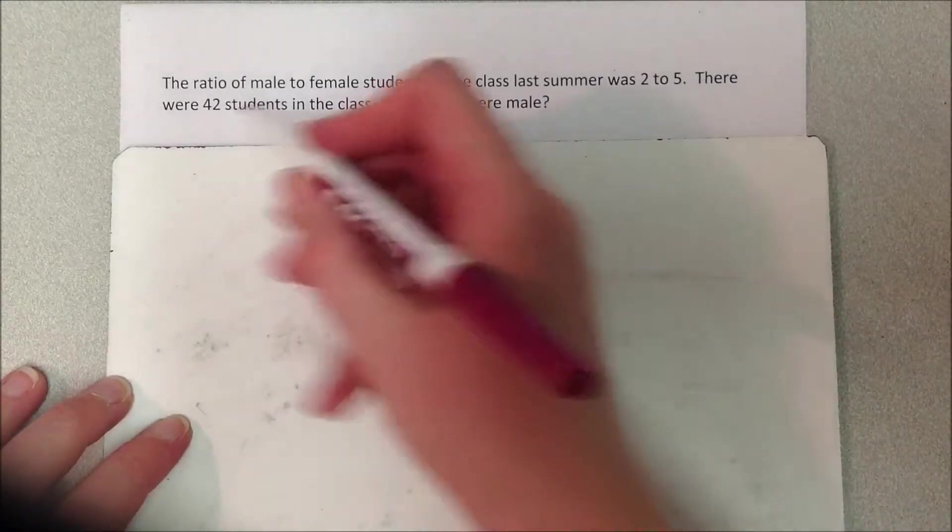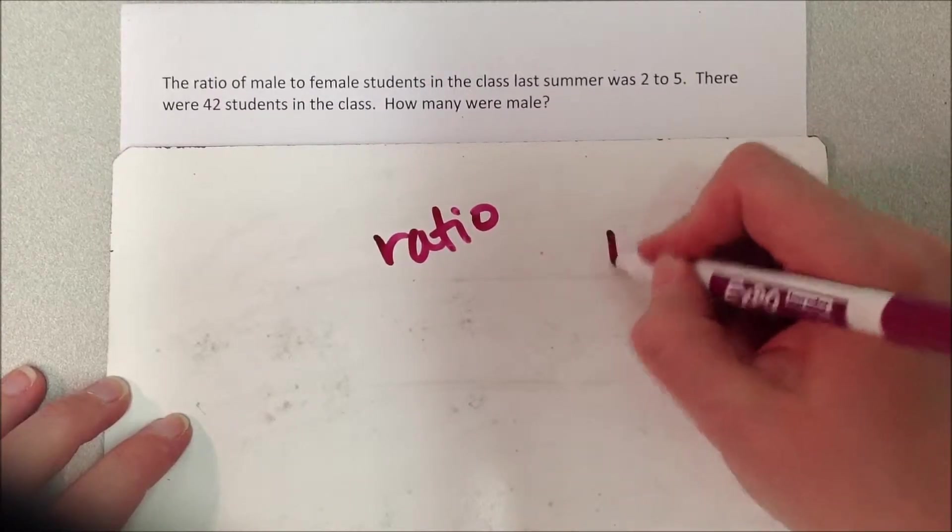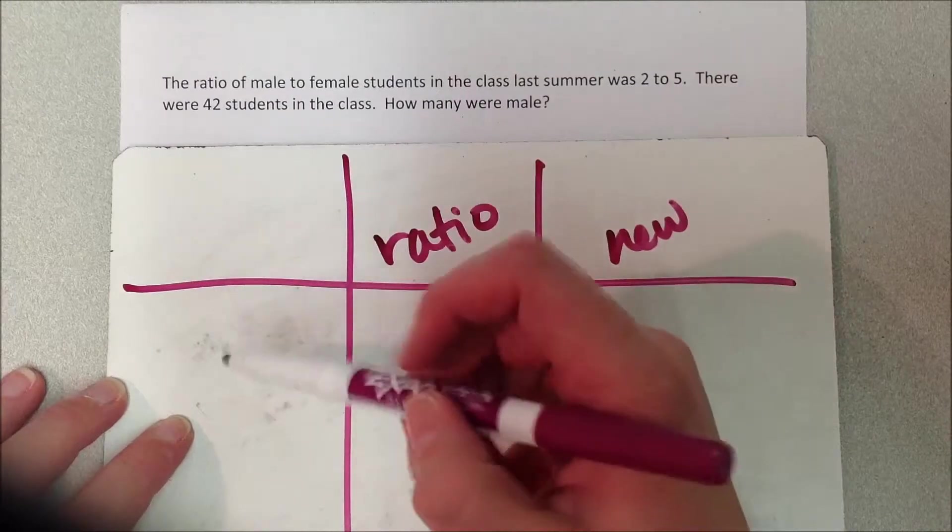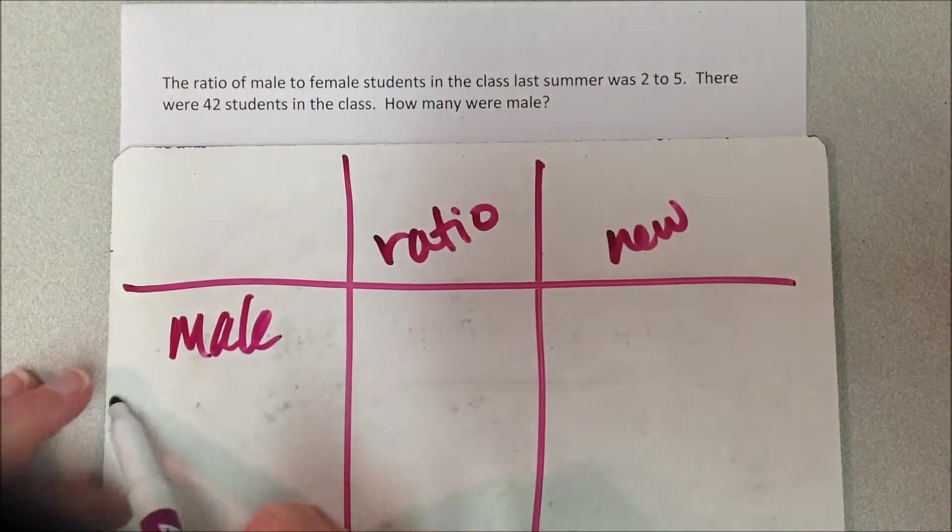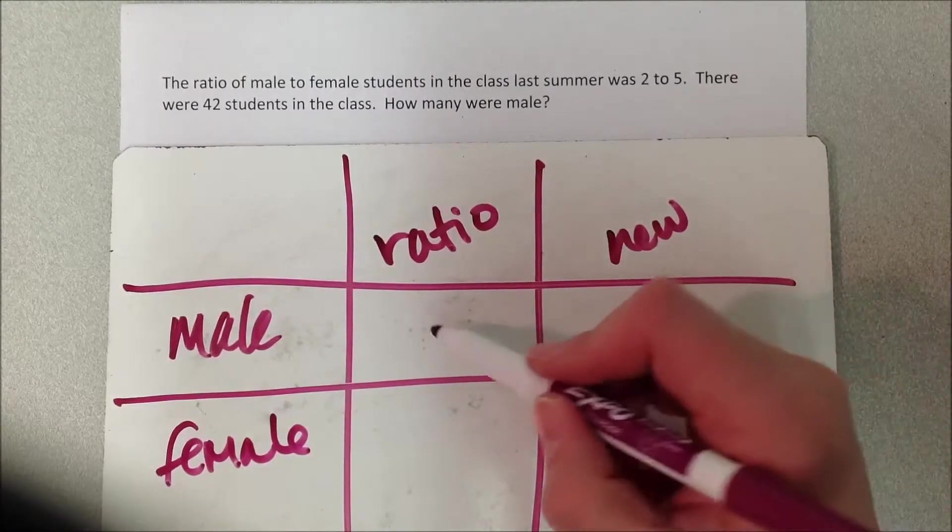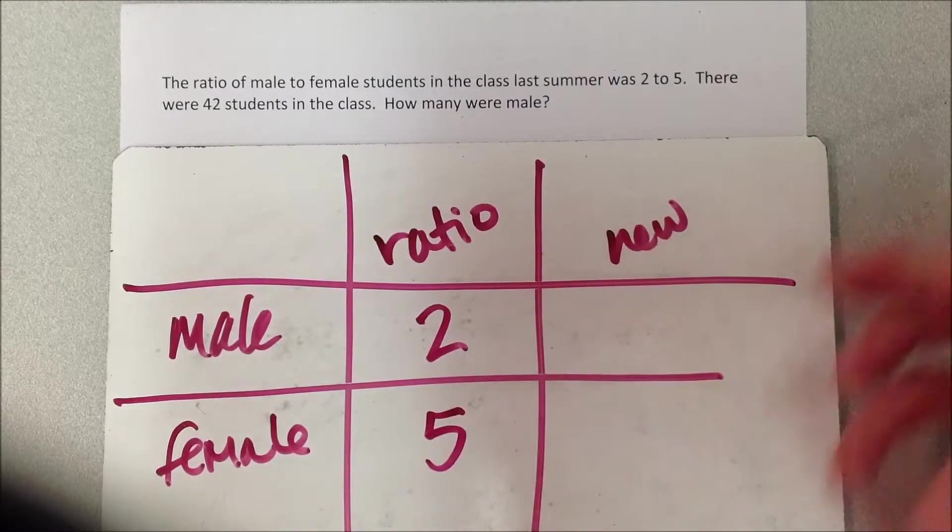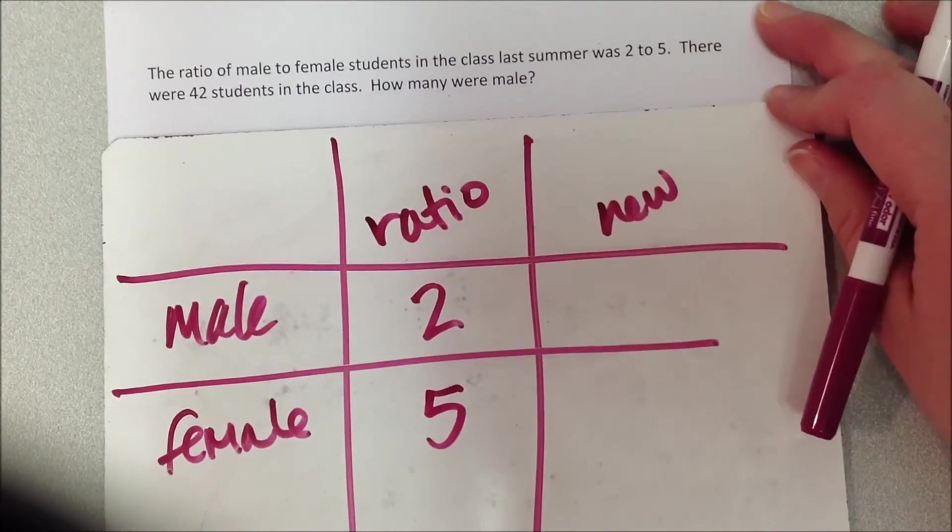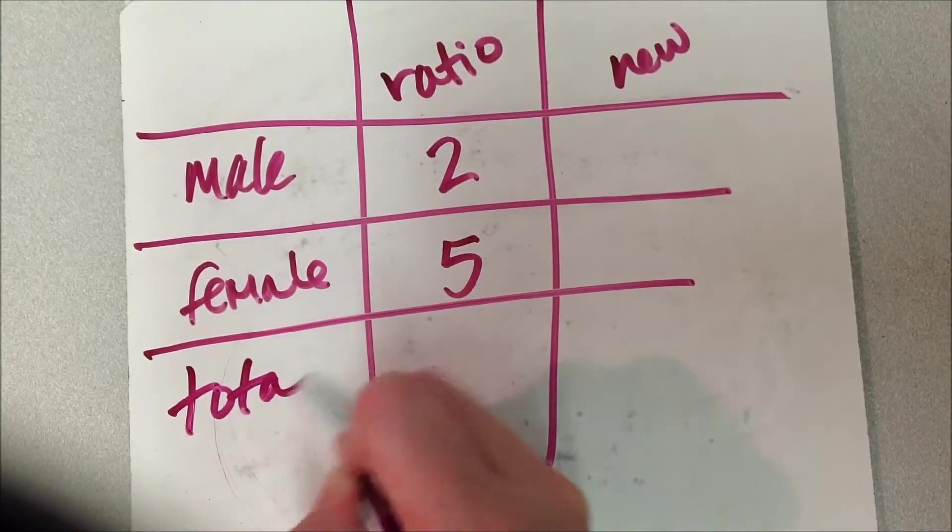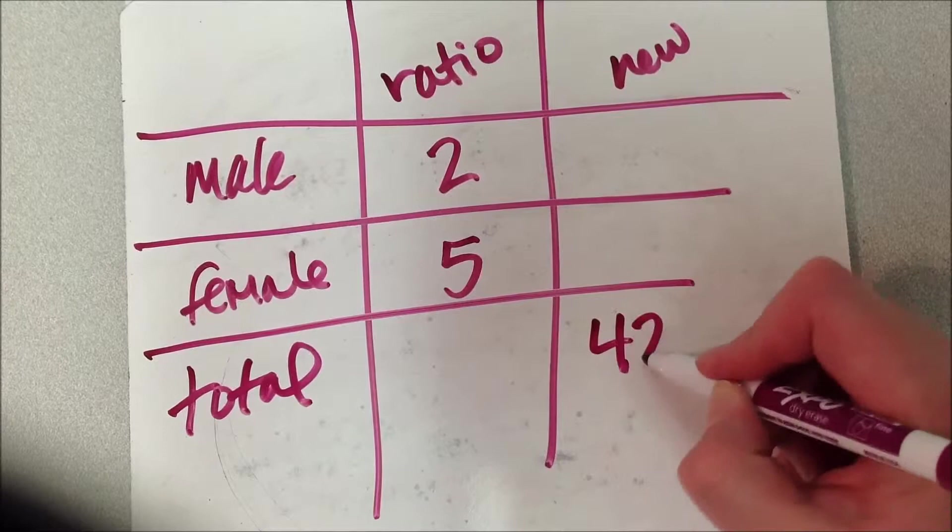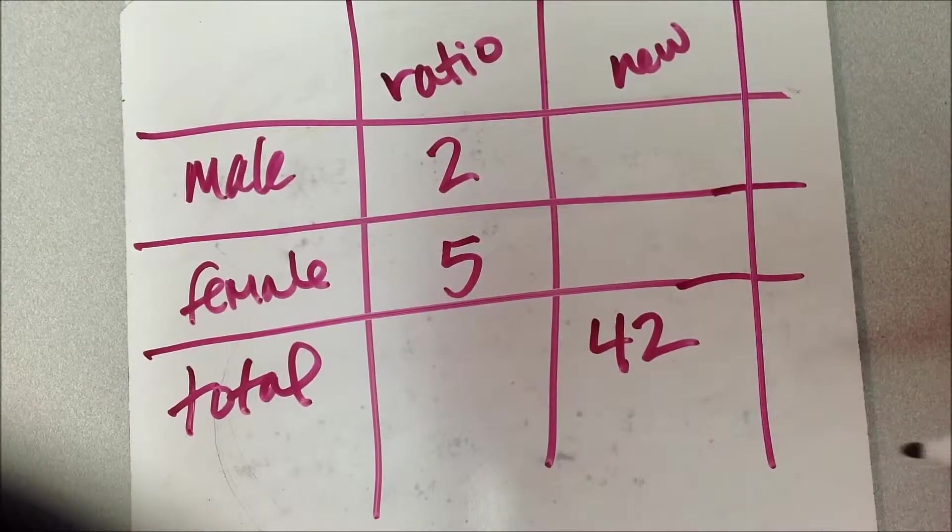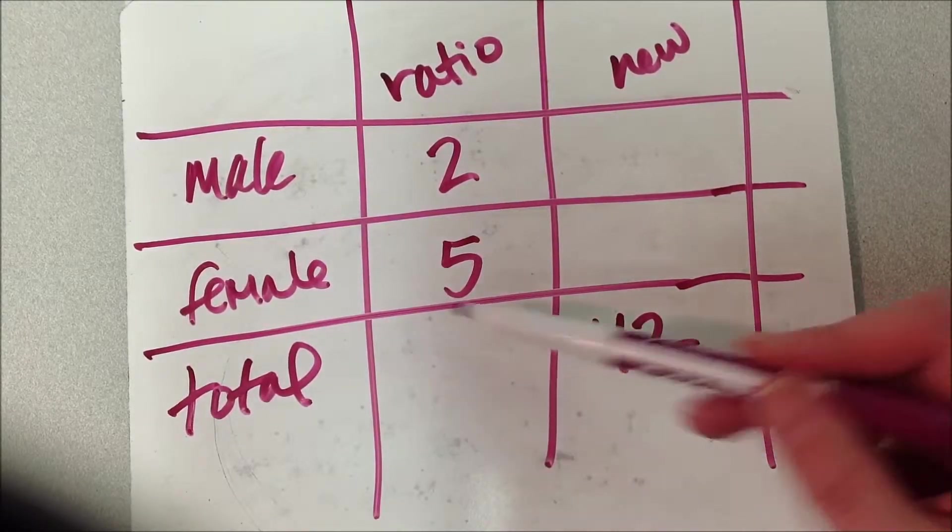Let me write out first my ratio. I have my ratio and my new amount, and what they give me are male students to female students. They tell me that for every 2 male students, there was 5 female students. But then they give me this third piece of information - a total. They said there were 42 students total in class. So that's weird, I don't have that information, I don't have a number for right here.